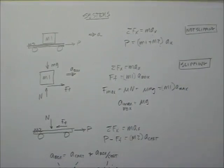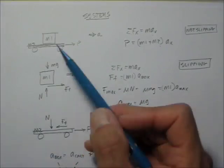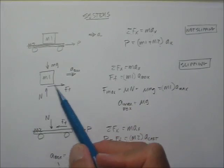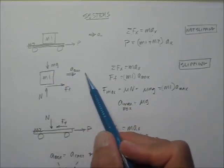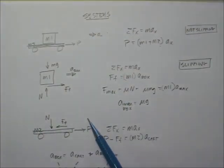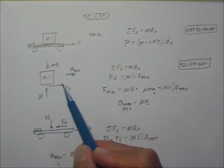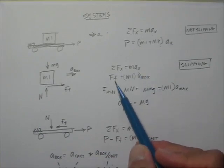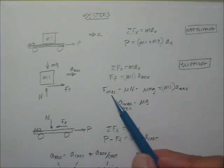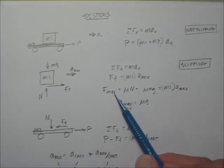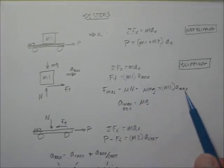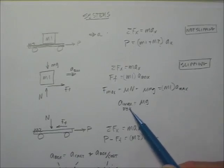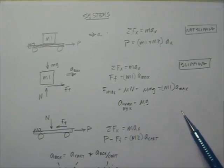However, if it's slipping, we have to separate the box and cart into separate free body diagrams. For the box: it has mg and a normal force. The only thing accelerating the box is friction, which must act in the direction of acceleration. Sum of forces: force of friction equals mass times acceleration. If slipping, friction is maximum — mu times normal, which equals mu times mg — giving maximum acceleration equal to mu times g.